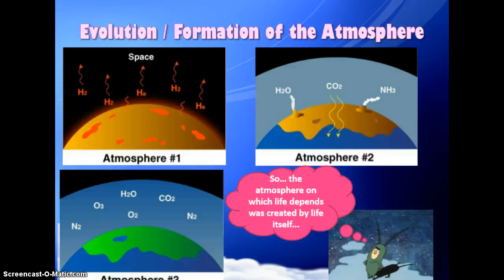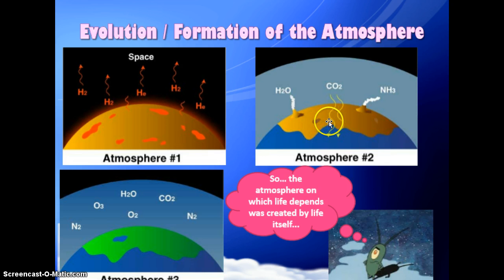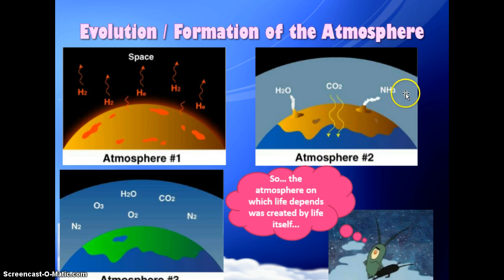The atmosphere filters out harmful radiation, traps heat, keeps us warm without being too warm, and cycles important gases such as water vapor and others. The way the atmosphere formed: after the Big Bang, everything was hydrogen and helium. These small atoms escaped and didn't form an atmosphere, but as everything cooled, volcanic outgassing produced water, ammonia gas, and carbon dioxide.